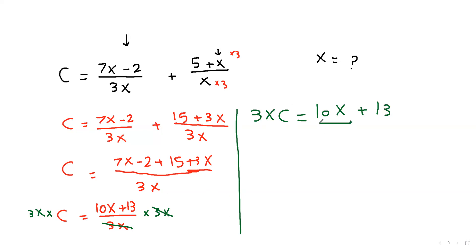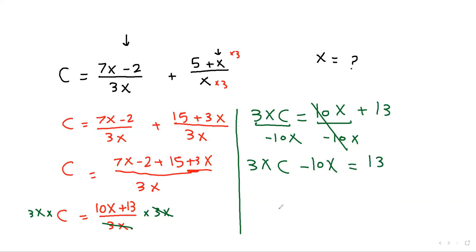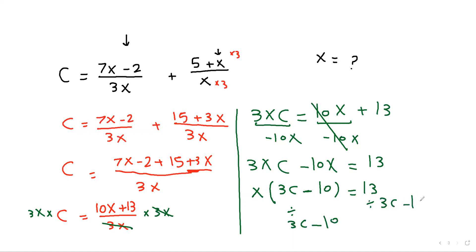We have x terms on both sides, so subtract 10x from both sides. Cancel them out: 3xc minus 10x equals 13. Take x as a factor: x times (3c minus 10) equals 13. Divide both sides by (3c minus 10), so x equals 13 over (3c minus 10).